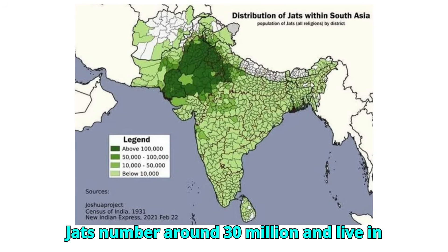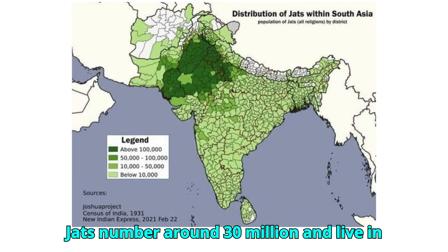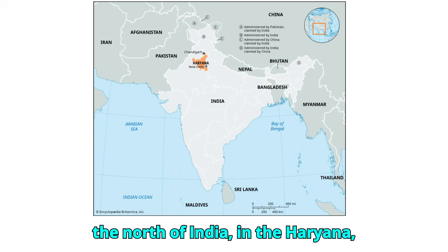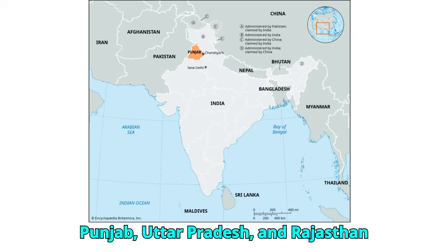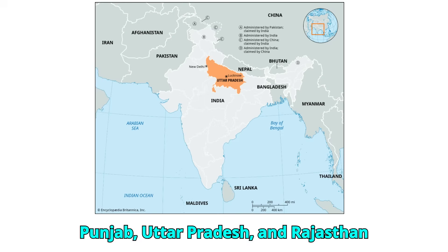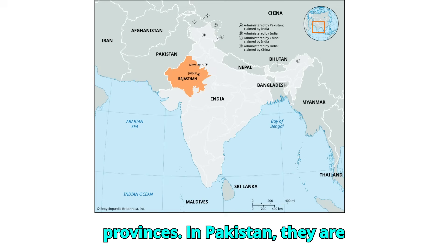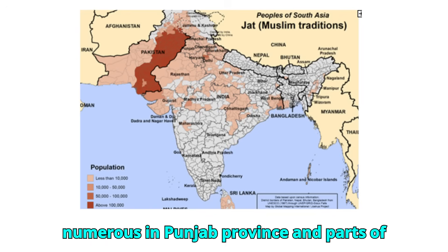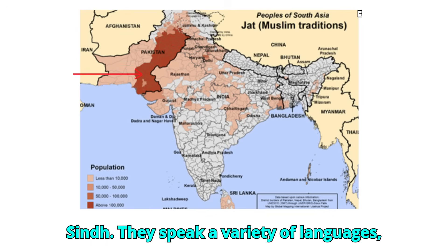JATs number around 30 million and live in the north of India, in the Haryana, Punjab, Uttar Pradesh, and Rajasthan provinces. In Pakistan, they are numerous in Punjab province and parts of Sindh.